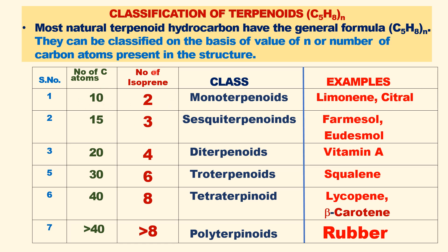Monoterpenoids have two isoprene units and 10 carbon atoms — examples include limonene and citral. Vitamin A is also a terpenoid. Tetraterpenoids include lycopene and beta-carotene, with eight isoprene units. Polyisoprene, with more than eight isoprene units, includes natural rubber.